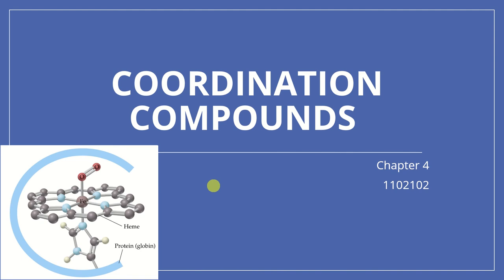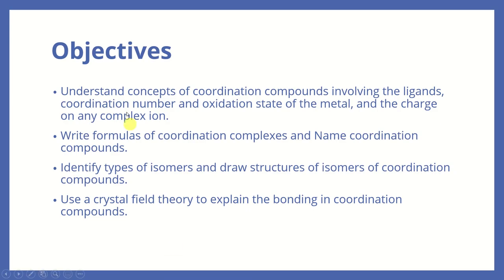Sawatdee ka. Now we come to chapter 4, which is about coordination compounds. The objectives are listed here. You have to understand the concept of coordination compounds, which involve the ligands, coordination number, oxidation state of the metal, and the charge on any complex ion. We're going to learn about this in part one about terminologies.